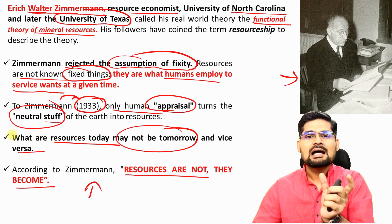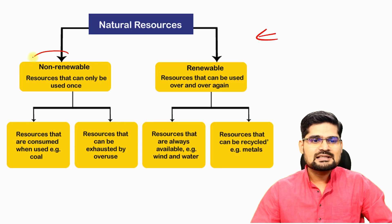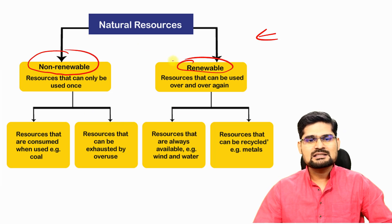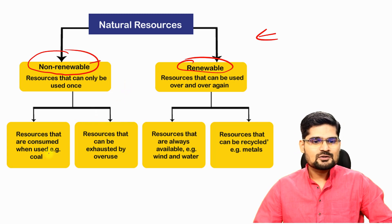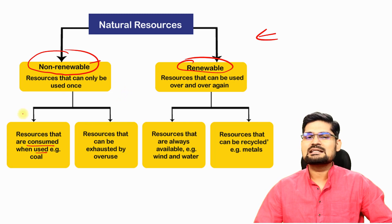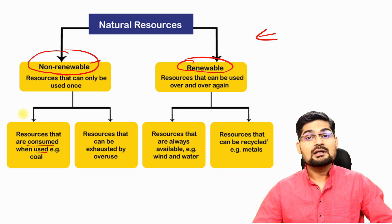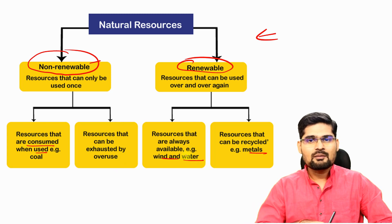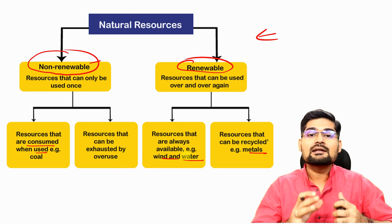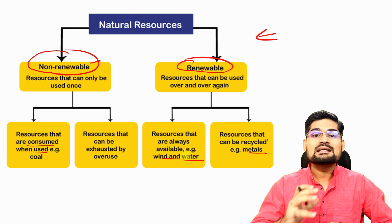Natural resources can be divided into non-renewable and renewable resources. Resources that are consumed when used are non-renewable — they are stock resources, do not evolve over time, and get consumed. Renewable resources can be renewed for their services; for example, metals can be recycled and wind and water move in a cyclic form. This is why the world is now looking at renewable sources of energy, because non-renewable sources are going to be exhausted in the future.